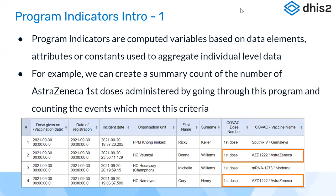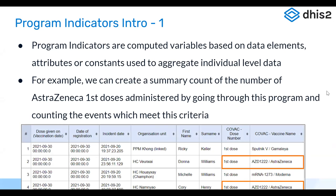Program indicators are computed variables based on data elements or attributes and constants that are used to aggregate individual level data. For example, if I visited a health facility yesterday and was registered in a tracker program, the health facility wants to know today how many patients were registered yesterday. My data will be aggregated, including all other patients' data who visited yesterday, using a program indicator which gives a count of how many patients visited.